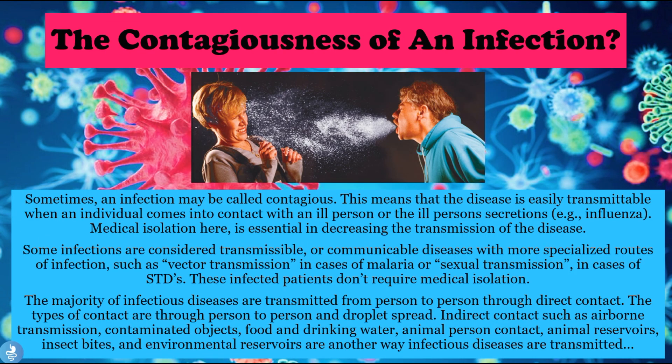Regarding the contagiousness of an infection: sometimes an infection may be called contagious, meaning the disease is easily transmissible when an individual comes into contact with an ill person or their secretions, such as in cases of influenza. Medical isolation is essential in decreasing transmission. Some infections are considered transmissible or communicable diseases with more specialized routes, such as vector transmission in malaria — requiring the female Anopheles mosquito — or sexual transmission in sexually transmitted diseases. These patients don't usually require medical isolation.